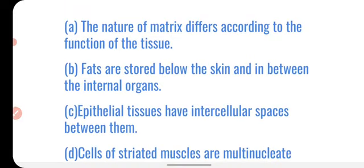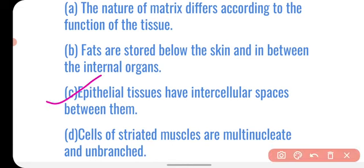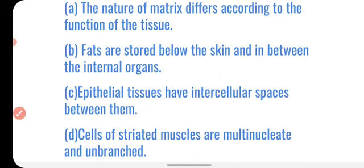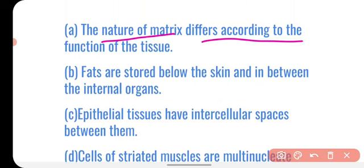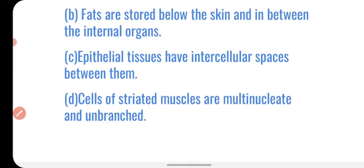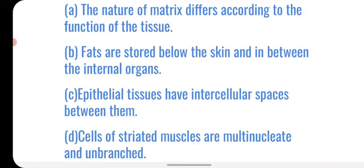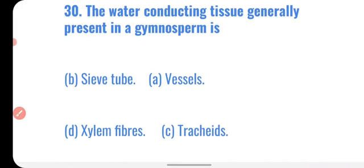Next question: choose the wrong statement. The nature of matrix differs according to the function of the tissue — true. Fats are stored below the skin and between internal organs — true. Epithelial tissue has intercellular spaces between them — this is incorrect, as epithelial tissues have no intercellular spaces. Cells of striated muscles are multi-nucleated and unbranched — true. So the wrong statement is option C.